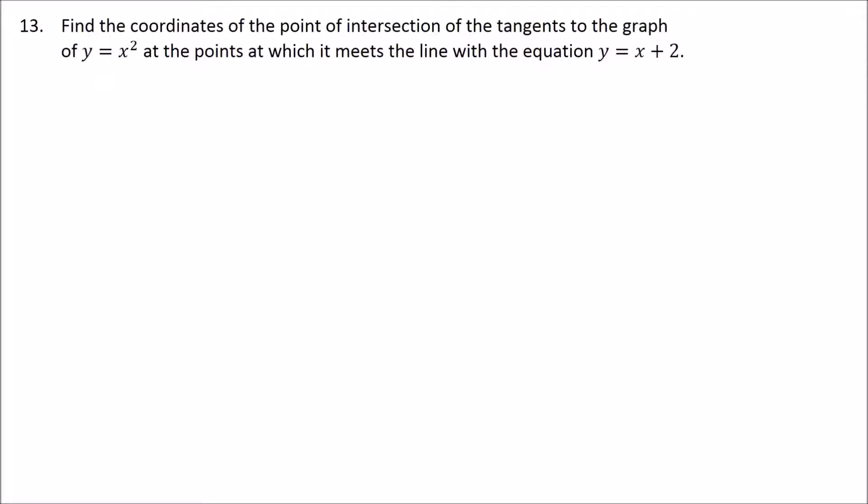Today I want to take a look at this question: find the coordinates of the point of intersection of the tangents to the graph of y equals x squared at the points at which it meets the line with the equation y equals x plus 2. The first thing we need to do with this kind of problem is figure out what points we're going to be using.